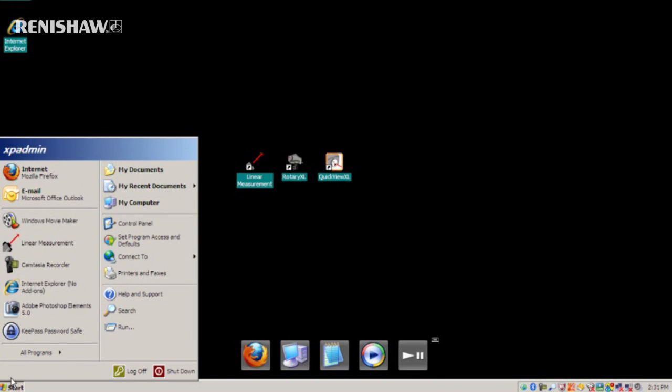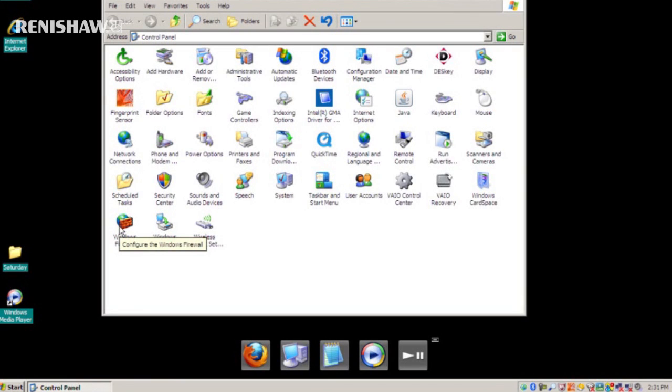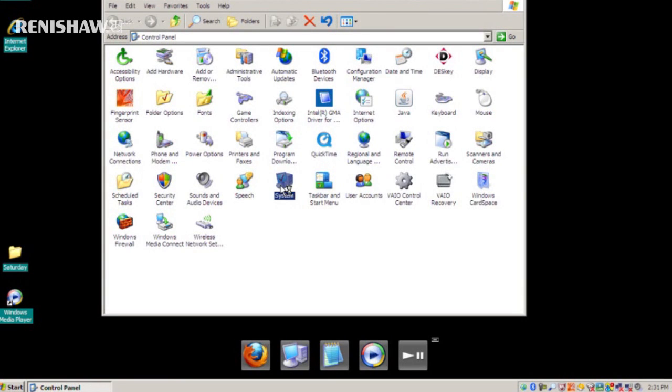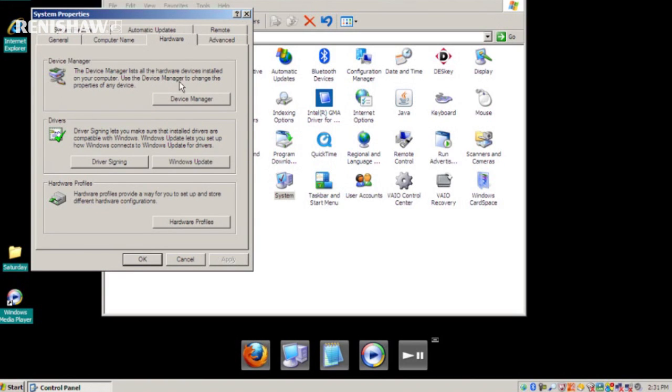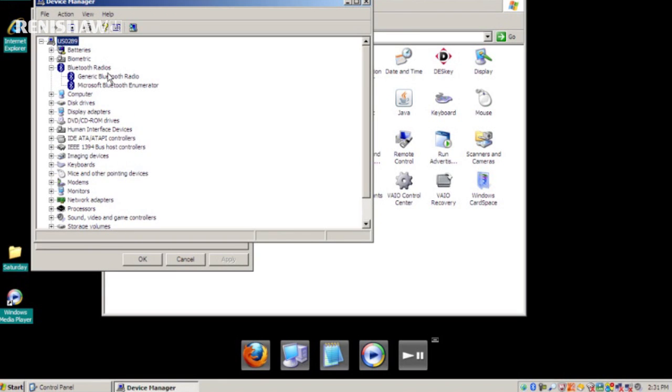click Start, Control Panel, System, Hardware, and then Device Manager. If you can see an entry for Bluetooth radios, click on the plus sign and check that both the generic Bluetooth radio and Microsoft Bluetooth enumerator are listed. If both are, your QC20W should be able to communicate with your PC.